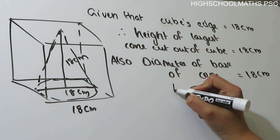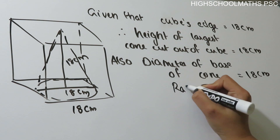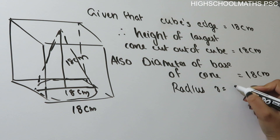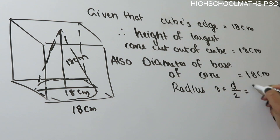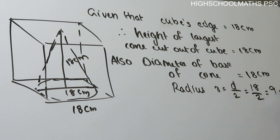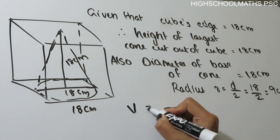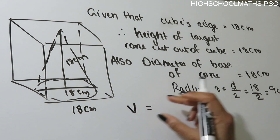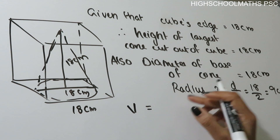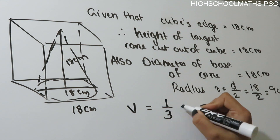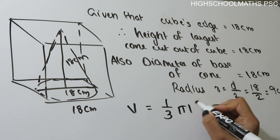Hence, the radius R is equal to diameter divided by 2, which equals 9 cm. Now we have the radius. The volume of the cone formula is: Volume = 1/3 × pi × R² × H.